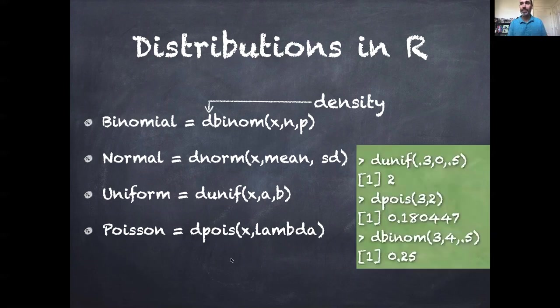We can take these distributions and plug numbers into them in R. For example, if we want to know what's the value of the uniform distribution at 0.3 given a range from 0 to 0.5?